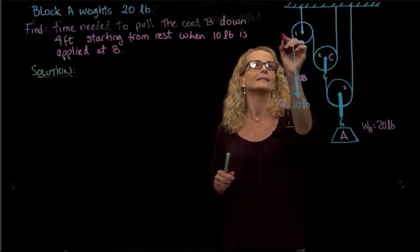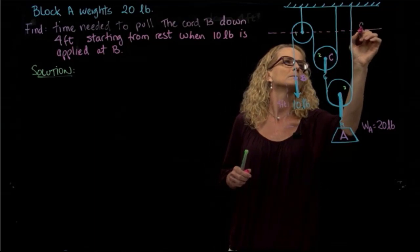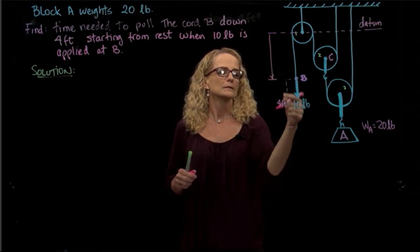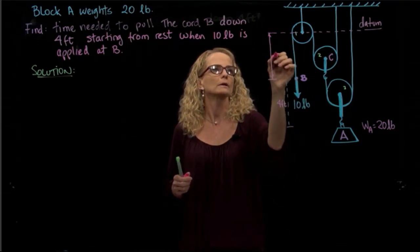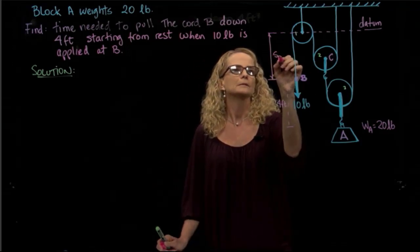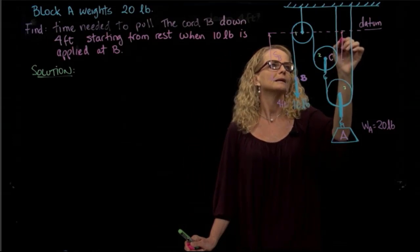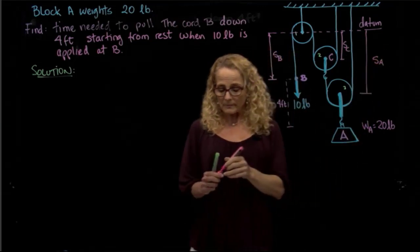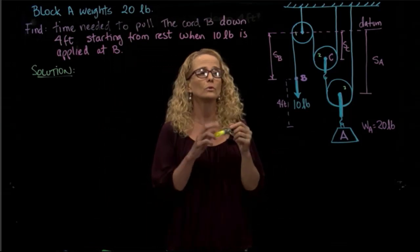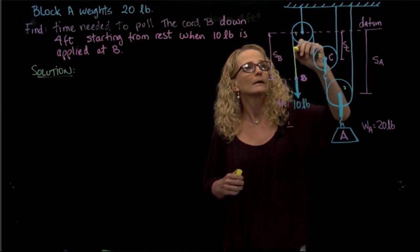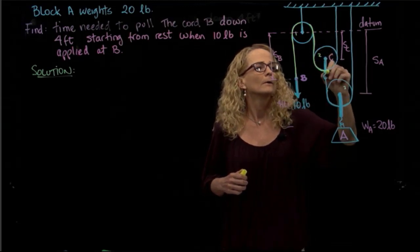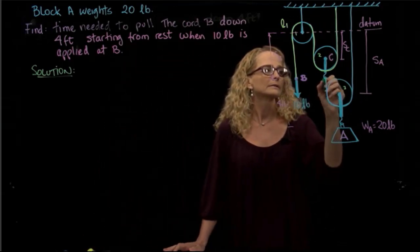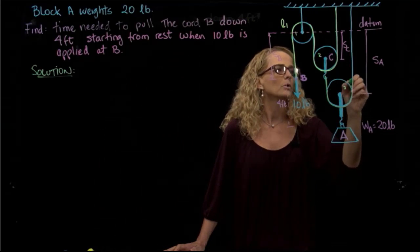I'm going to put a reference frame or datum. I'll call the distance at B a general variable S_B, I'll call the distance at pulley C as S_C, and the distance at block A as S_A. We see that we don't have only one cord in the problem — we have two cords. We have this cord here, let's call that L1. And then we have another cord that starts here and goes all the way to there.